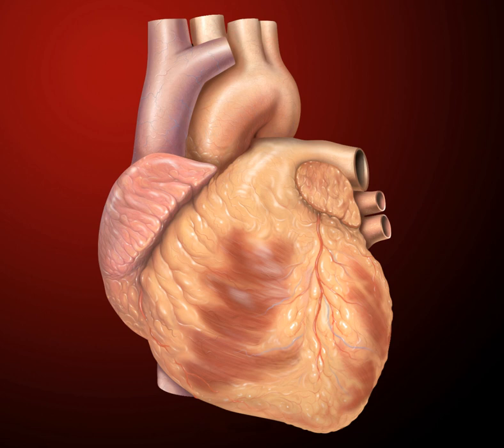The heart is a muscular organ in most animals, which pumps blood through the blood vessels of the circulatory system. Blood provides the body with oxygen and nutrients, as well as assists in the removal of metabolic wastes.